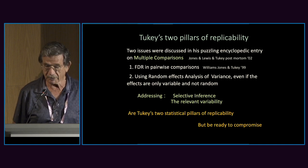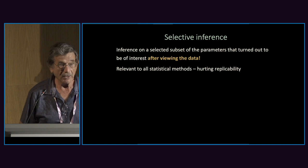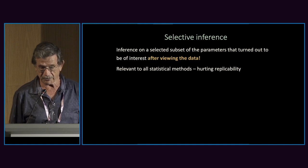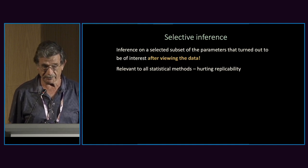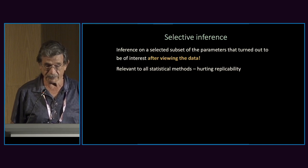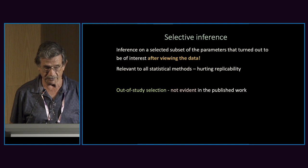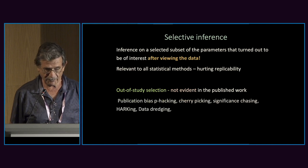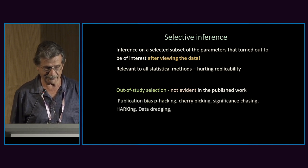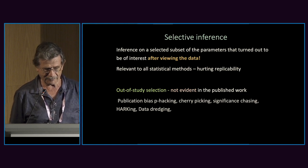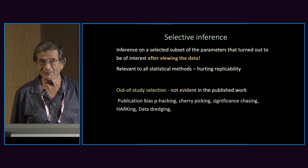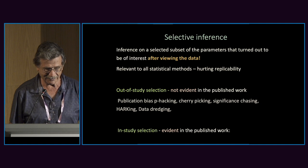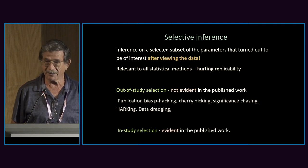There was also a point to be ready to compromise in practice. Selective inference is inference on a selected subset of the parameters that turned out to be of interest after viewing the data. It's relevant to all statistical methods and it's hurting replicability. There is out-of-study selection, which is not evident in the published work and is well known as hurting replicability, but my emphasis is on in-study selection, which is evident in the published work.